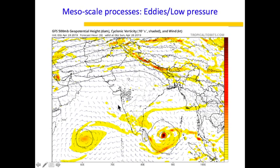Another example of a mesoscale system is eddies and low pressure, which we can easily identify in models. These large-scale circulating cyclonic systems are the eddies in the Northern Hemisphere — you see these eddies as a low pressure or depression. If you look at the timescale of these low pressures and depressions, it is of the order of four to five days, so these fall under the mesoscale category.